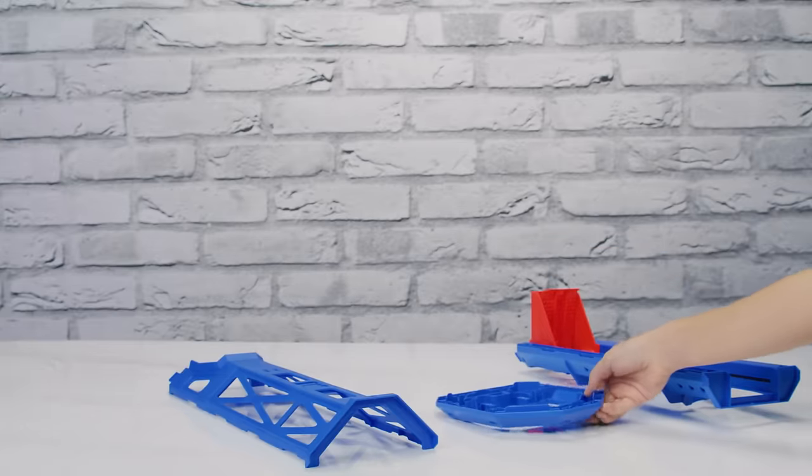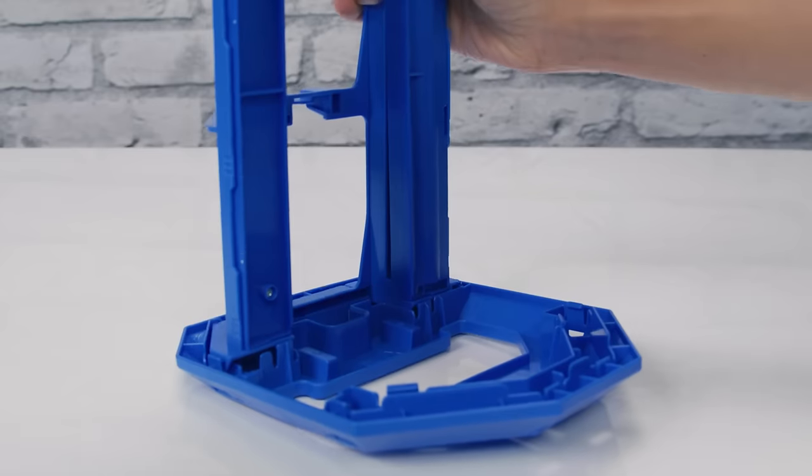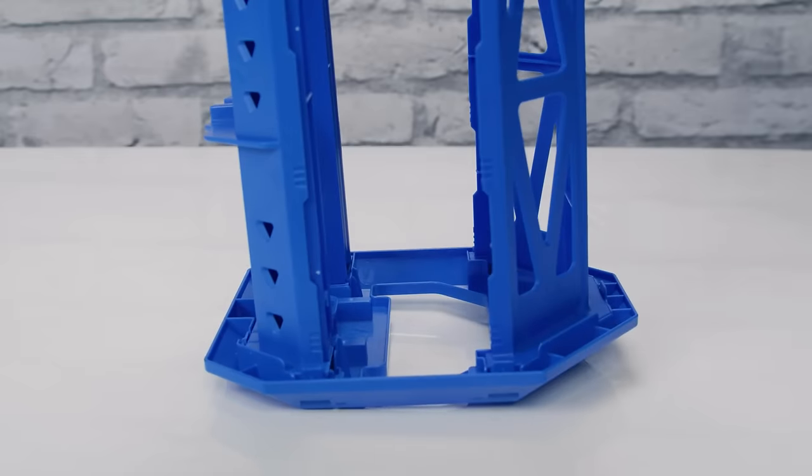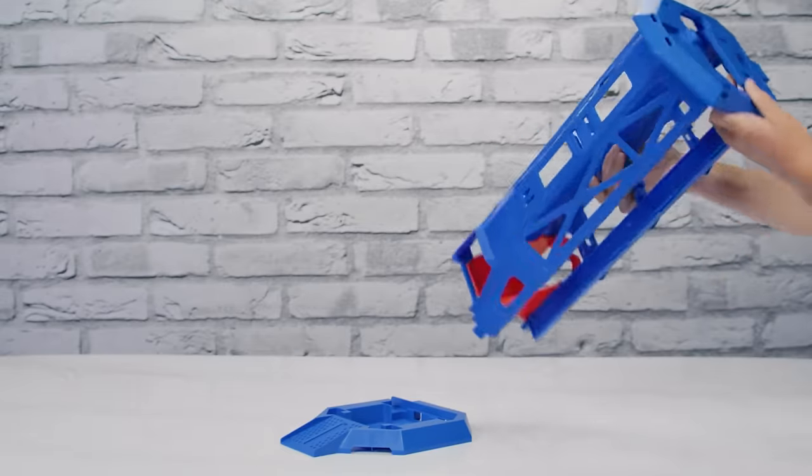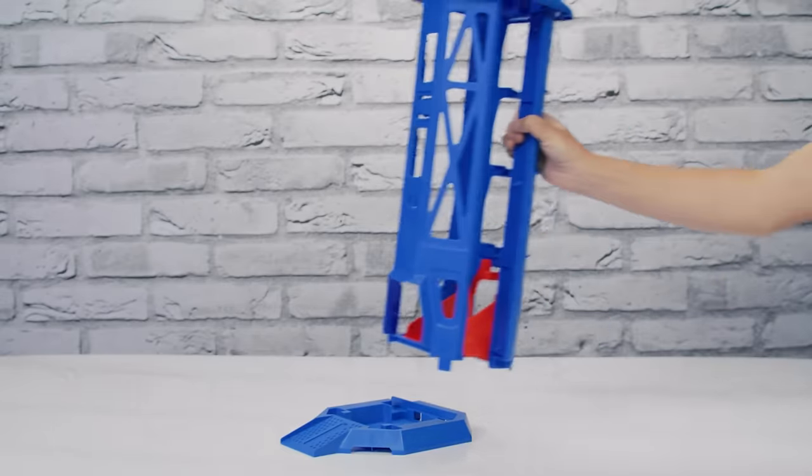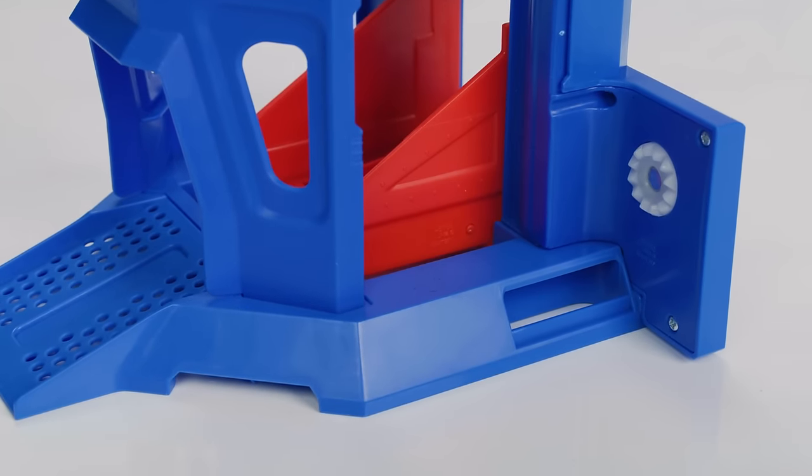First, assemble the elevator. Turn the side supports and ceiling upside down. Line up the connector points and snap into place. Flip the connected elevator structure right side up and connect to the base. Line up the connector points and snap into place.